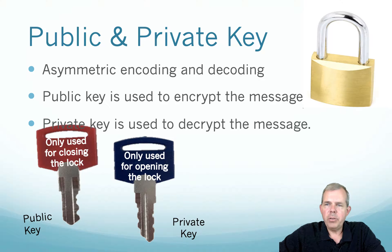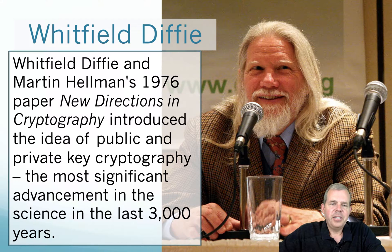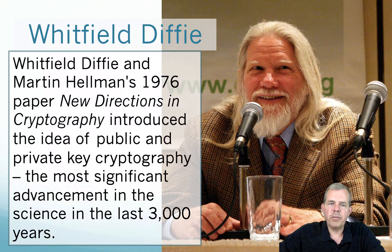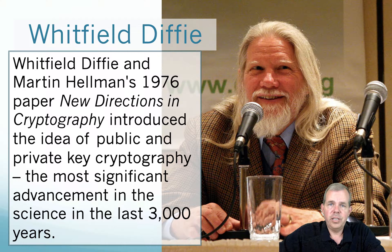The public key can be used to encrypt the message. In fact, the public key is called public because you might even publish it on the internet. The private key is going to be private to you, and the only thing it can do is open the lock. Here we have a picture of Whitfield Diffie — his 1976 paper called 'New Directions in Cryptography' introduced public and private keys. It's really a brilliant idea and the most significant advancement in this science in the last 3,000 years.